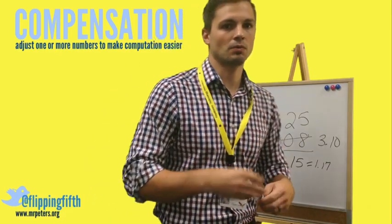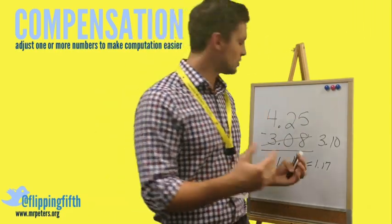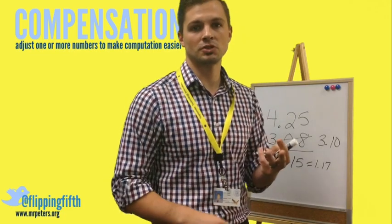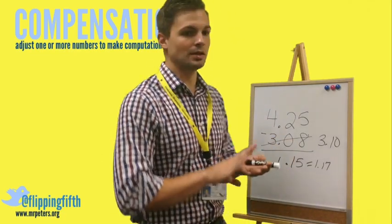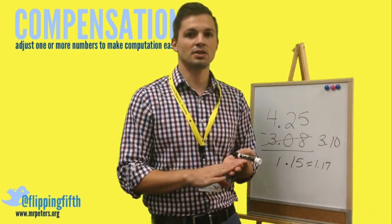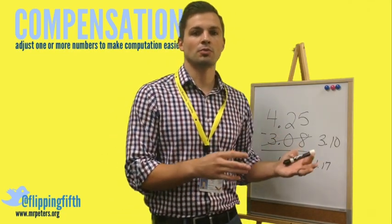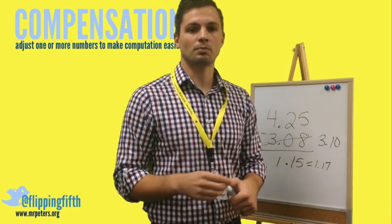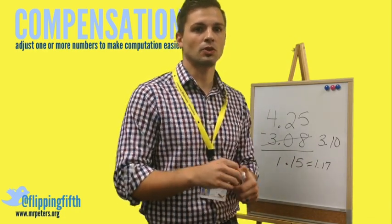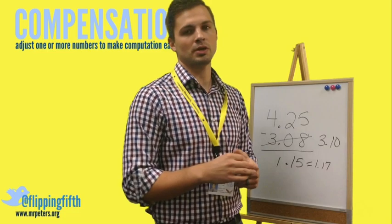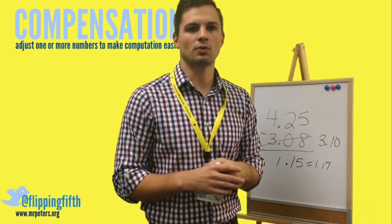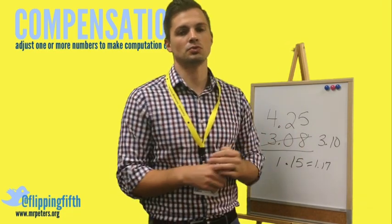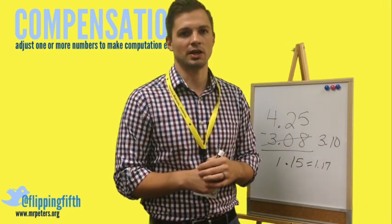When doing mental addition and subtraction of decimals, you can use compatible numbers, the associative property, the commutative property, and compensation. At the end of this video there will be two or three questions for you to answer — please use these tools that we've learned today.